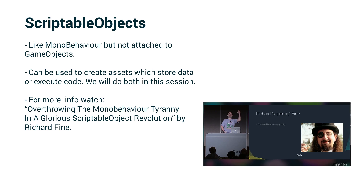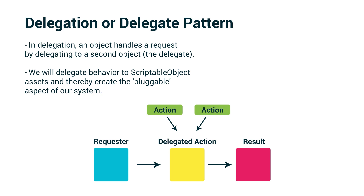Speaking of patterns, the software design pattern we're using is called the delegation or delegate pattern. In delegation, an object handles a request by delegating to a second object. We will delegate behavior to scriptable object assets, thereby creating the pluggable aspect of our system. The requester wants to do something, sends a request to our delegated action, and doesn't need to know what action it's calling — it just says 'do an action.' We can plug in and out different actions, and it outputs a result based on whatever action is currently being delegated to.